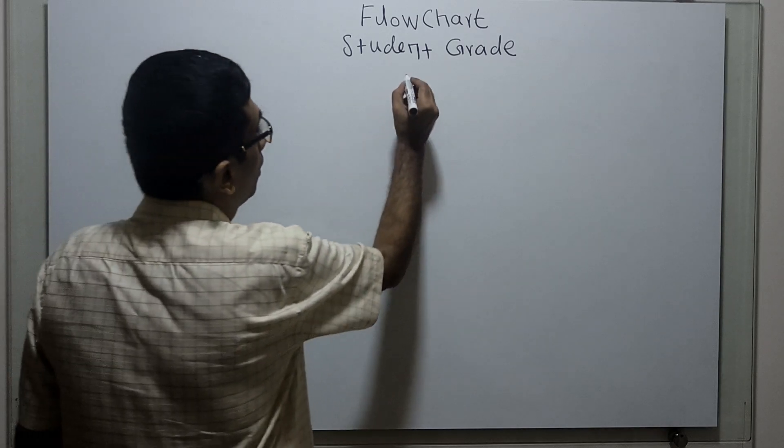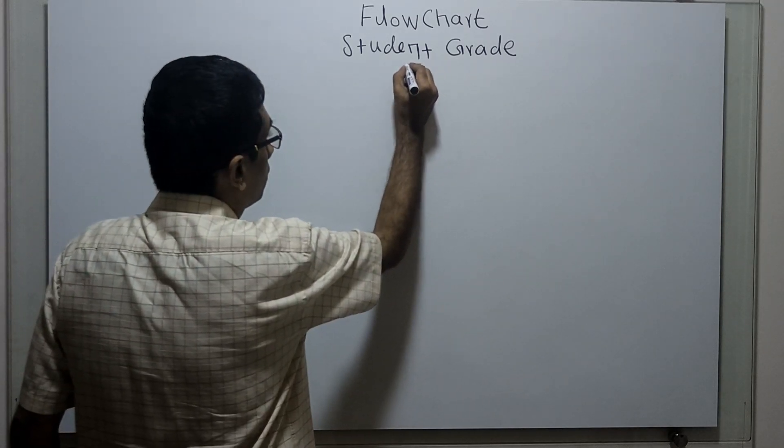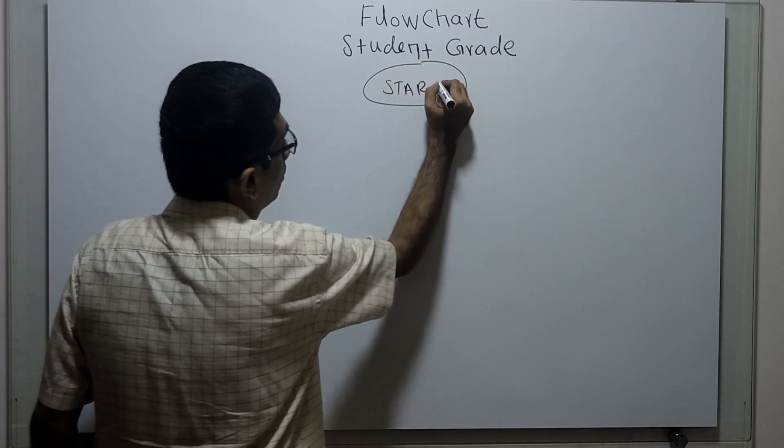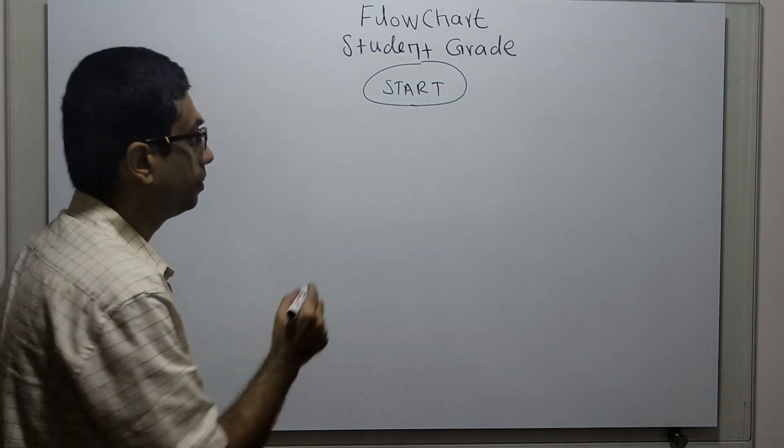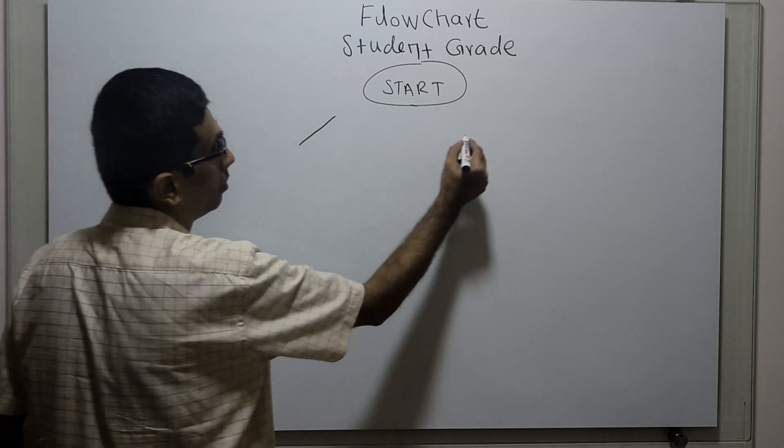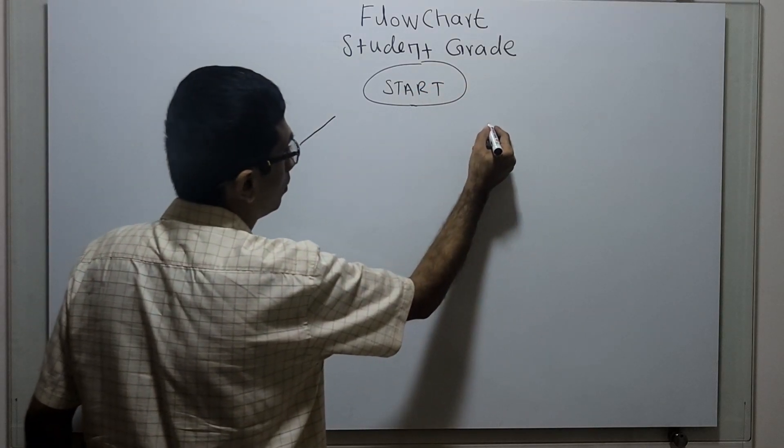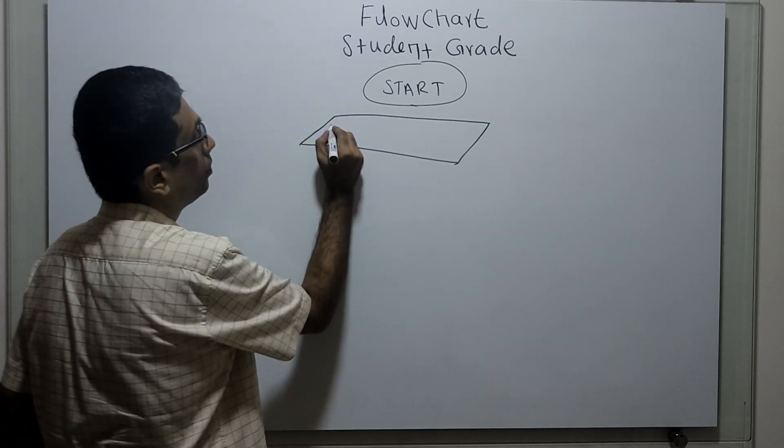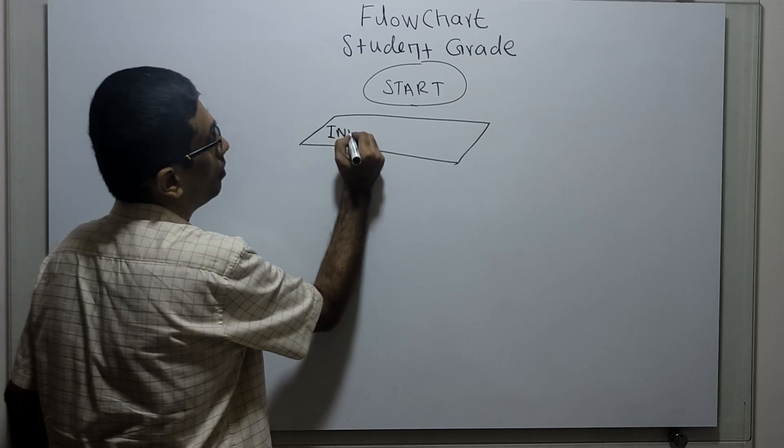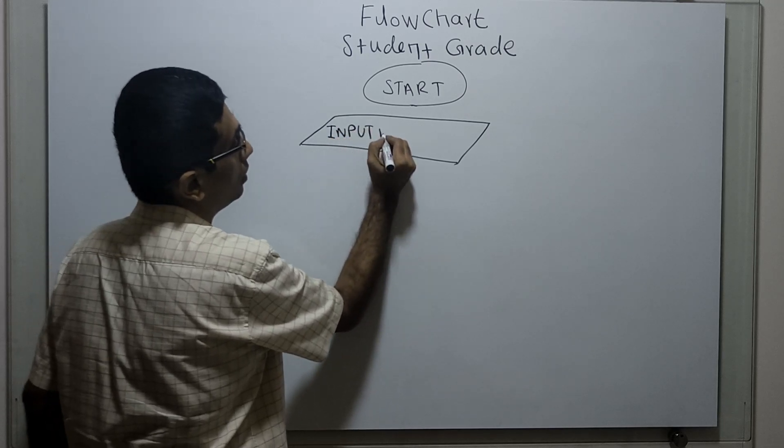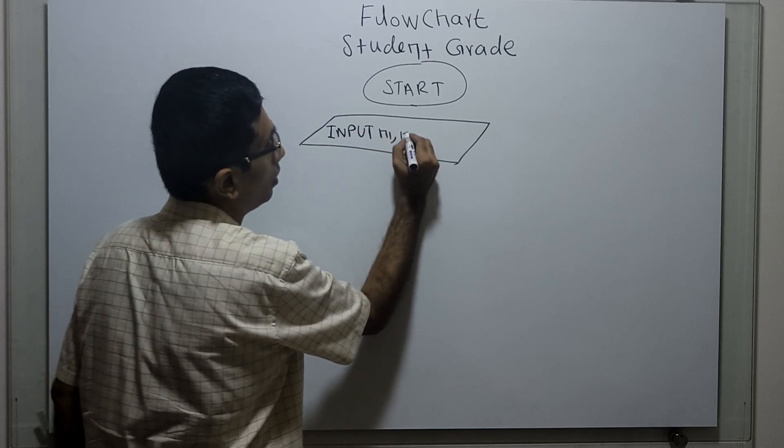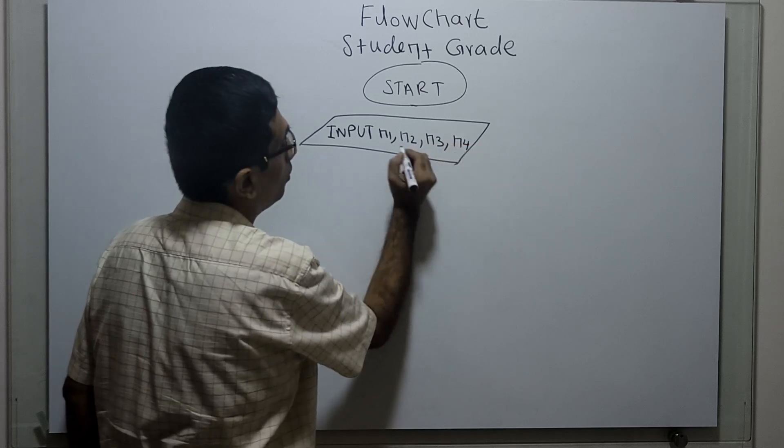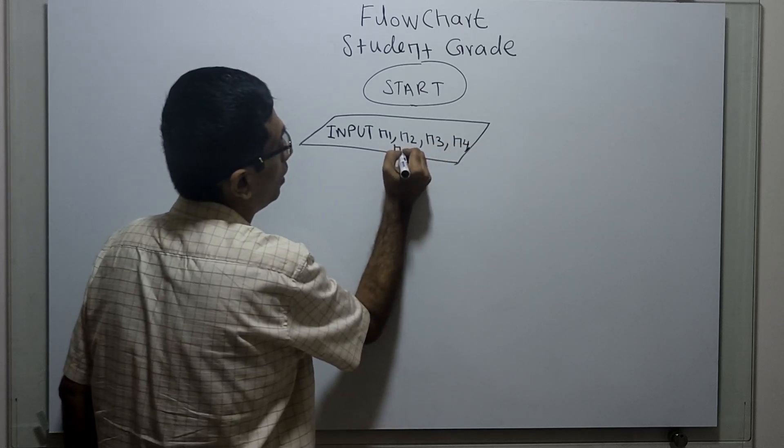This is the logical start of the flowchart. I am obtaining five subject marks as input: n1, n2, n3, n4, n5.